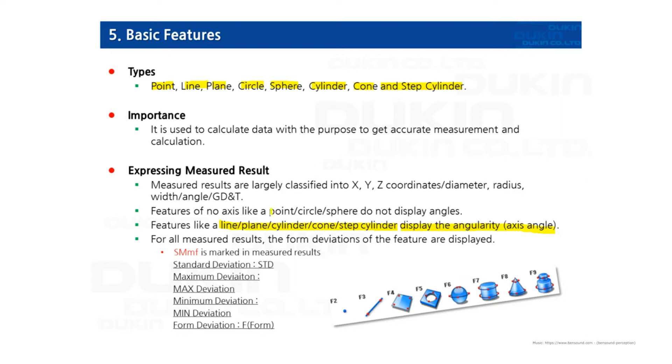But point, circle, and sphere don't have any axis, so therefore they don't have A1, A2.